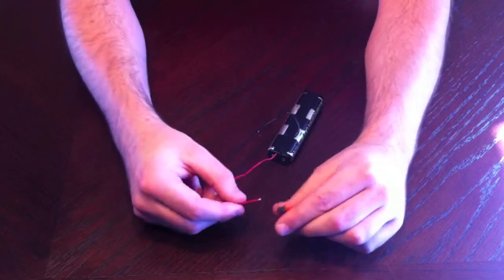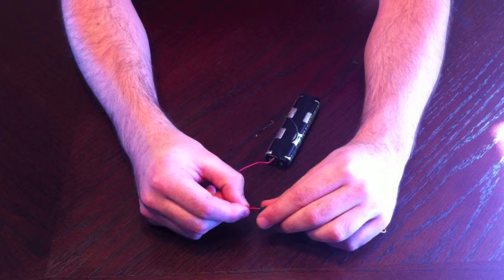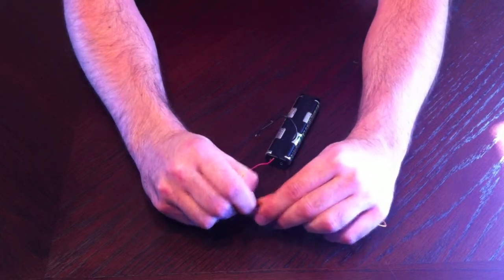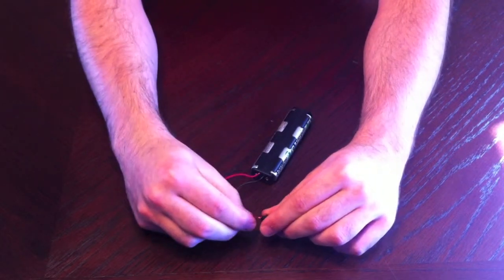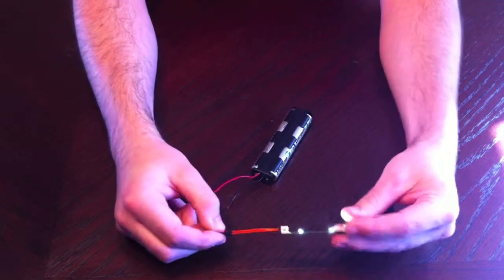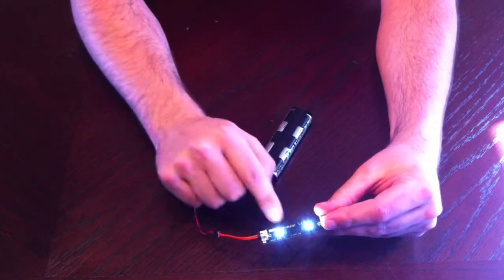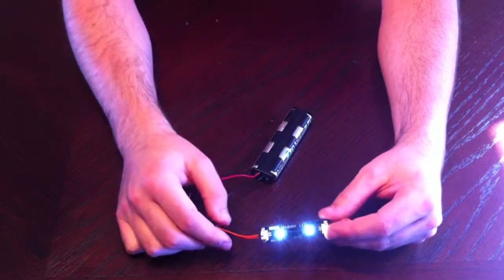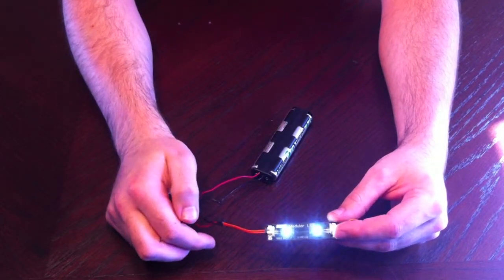You put the positive in the top and negative in the bottom, and that will power up your LEDs. They don't power up to full brightness with batteries because there's not as much current going through.